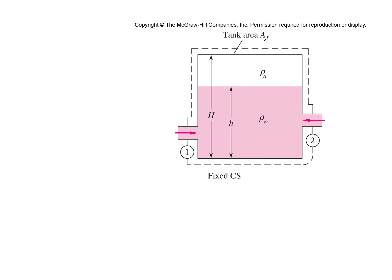The volumetric flow rate is the mass flow rate divided by density, which equals A times the average velocity. Now let's look at another example: a tank of cross-sectional area A_tank, with water flowing in from two sides and air at the top.